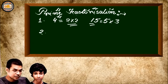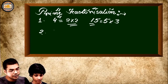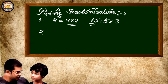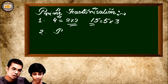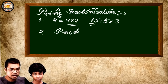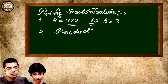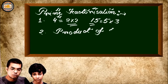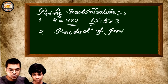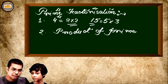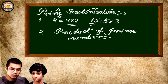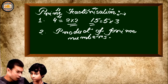Now comes prime factorization. When a particular number is produced as the product of prime numbers only — that is the definition of prime factorization. Do you know prime numbers? Any number which has only two factors — the number itself and one — is known as a prime number.